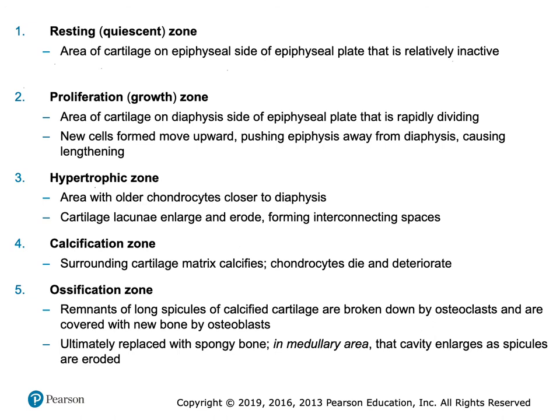The chondrocytes' lacunae start to merge — they're sharing lacunae. The next zone is where cartilage starts to attract calcium, and when it attracts calcium, the chondrocytes start to die. Any calcified spikes are going into the ossification zone, where they're broken down by osteoclasts and replaced by osteoblasts. The goal is replacing a large portion of the spongy bone, and the medullary cavity gets wider through that erosion.